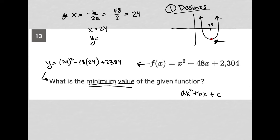When I go to my calculator, I see that 24² is 576. 48 times 24 is 1,152, so minus 1,152. And then, of course, plus 2,304. So all together, I have 576 - 1,152 + 2,304.